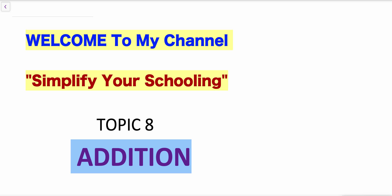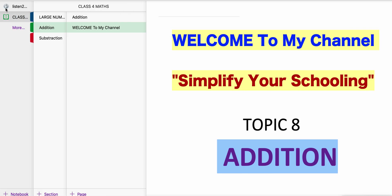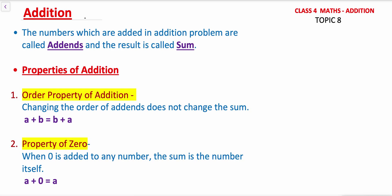Hi friends, welcome to my channel Simplify Your Schooling. Today's topic of math tutorial series of Class 4 is addition. The numbers which are added in an addition problem are called addends and the result is called the sum. For example, 20 plus 15 is equal to 35, so the numbers 20 and 15 are addends and the answer 35 is the sum.